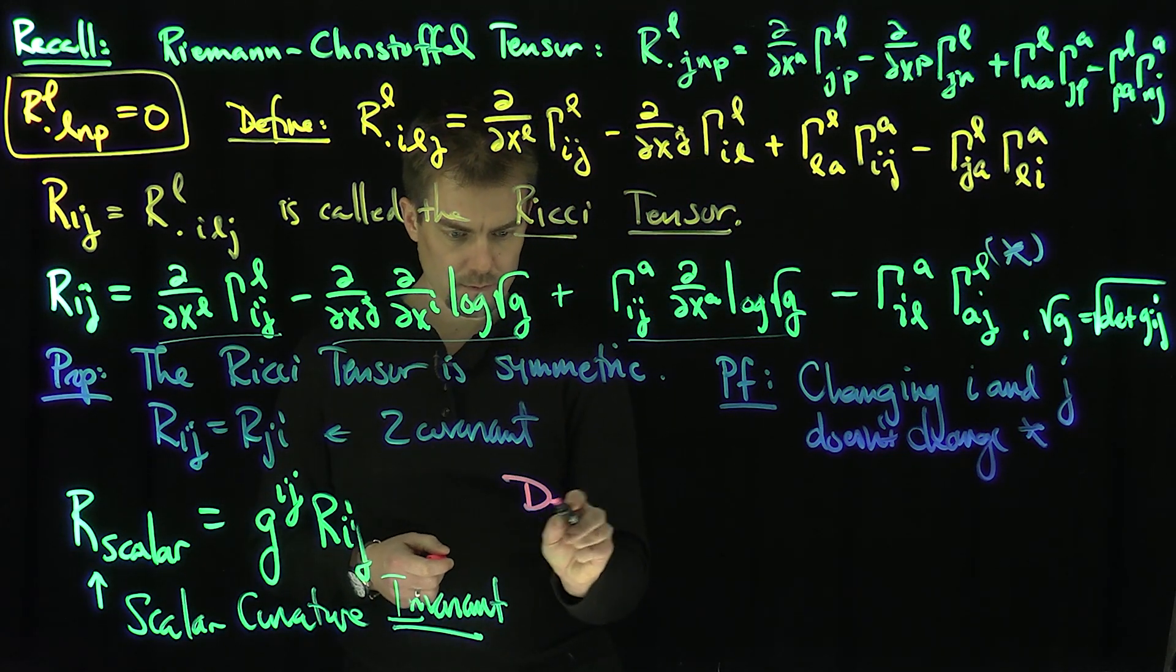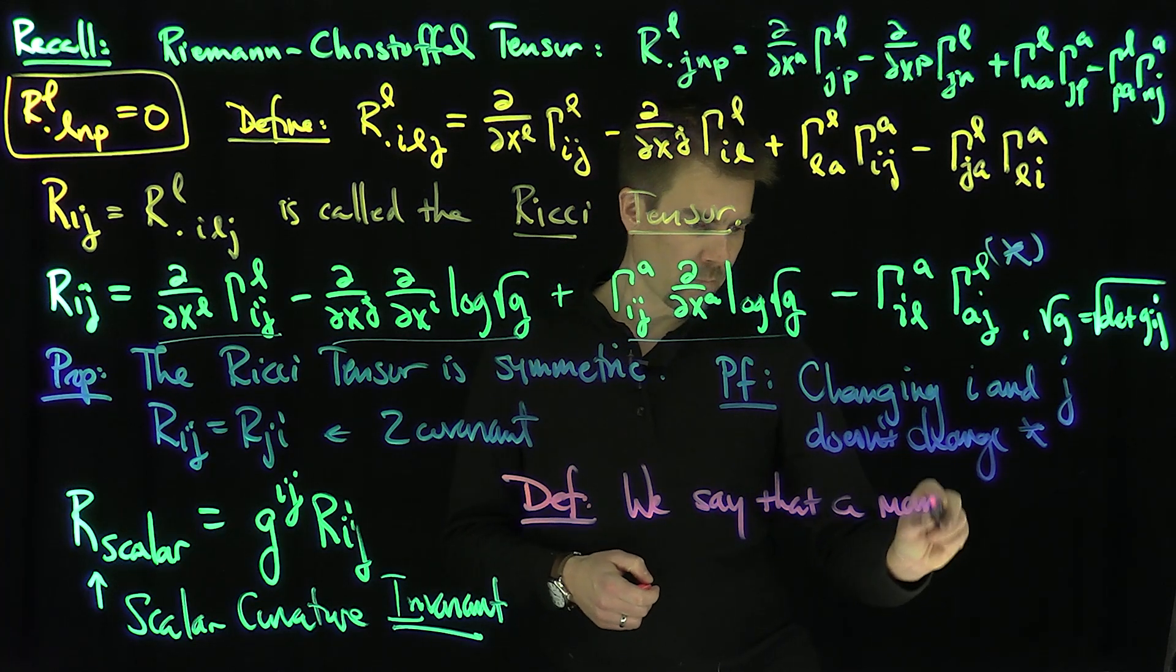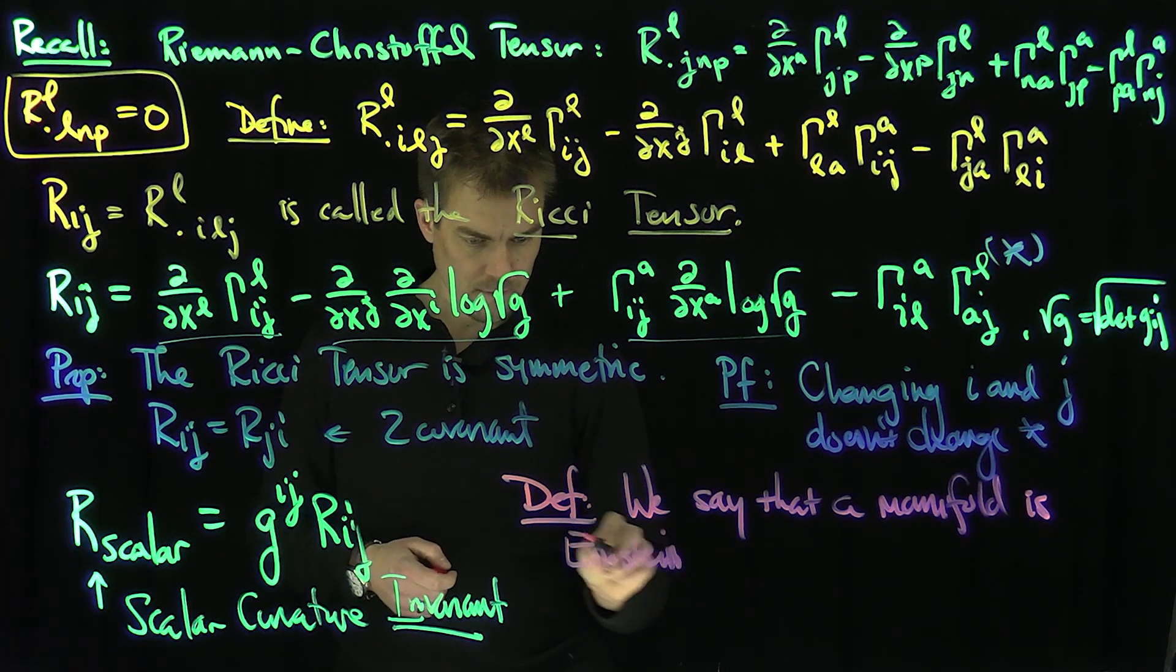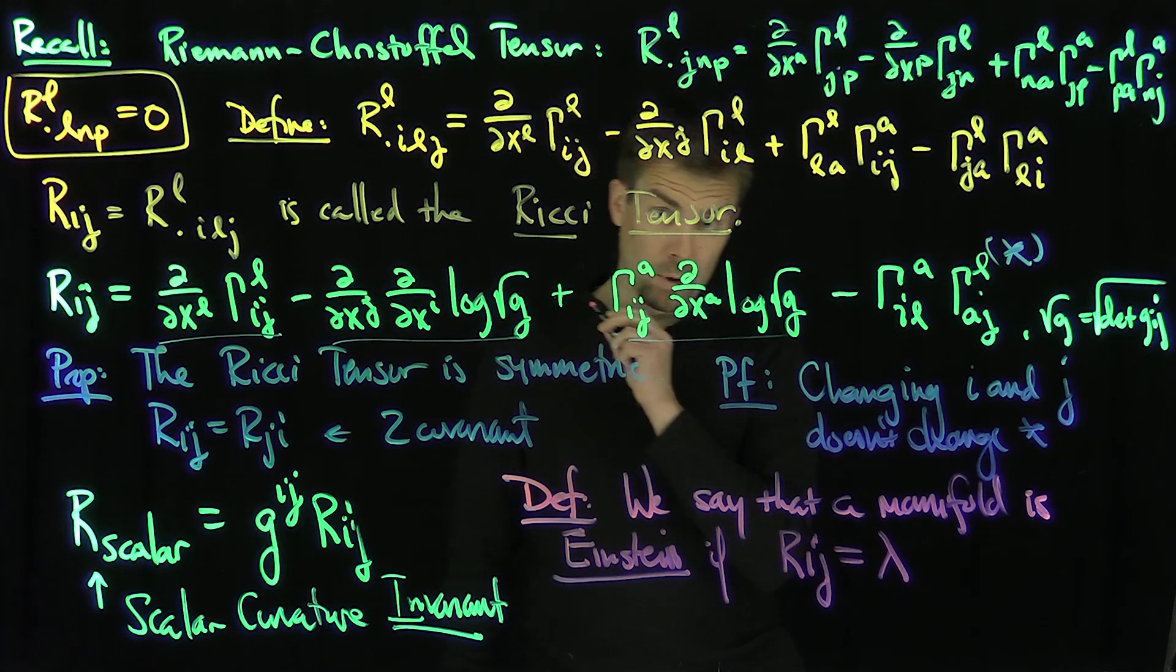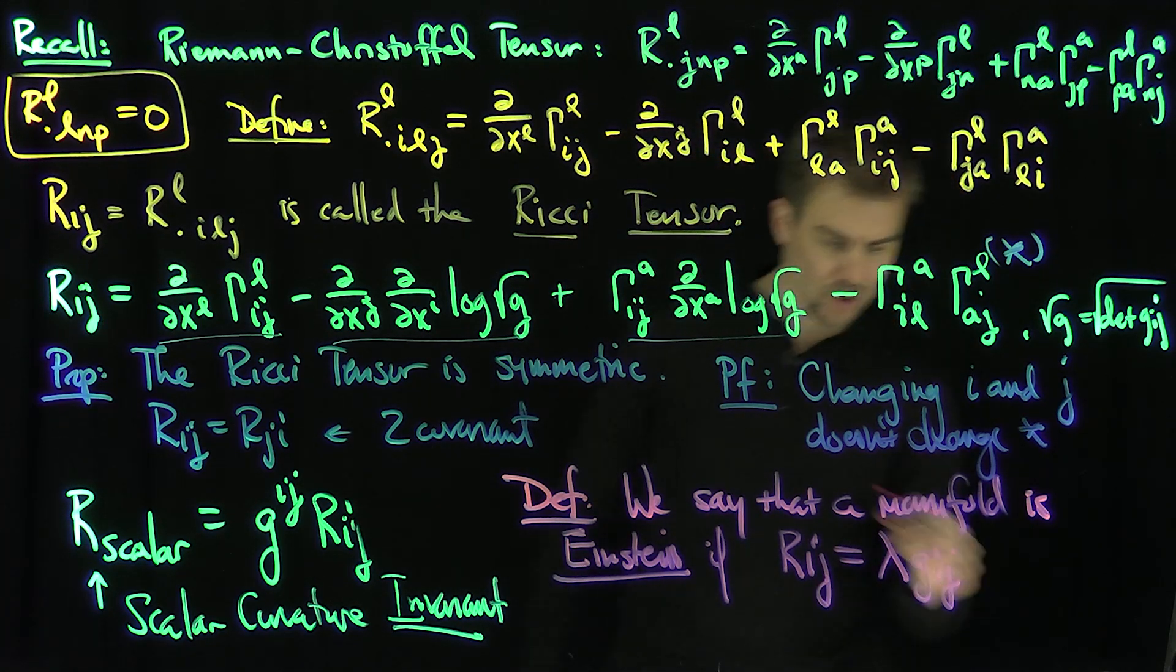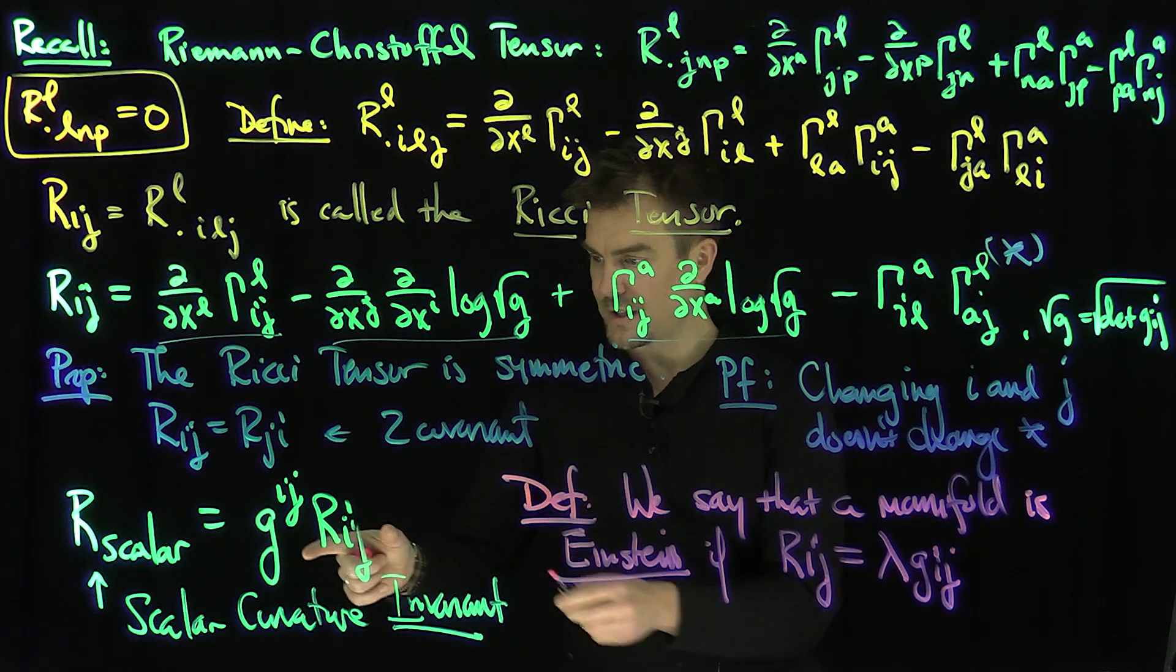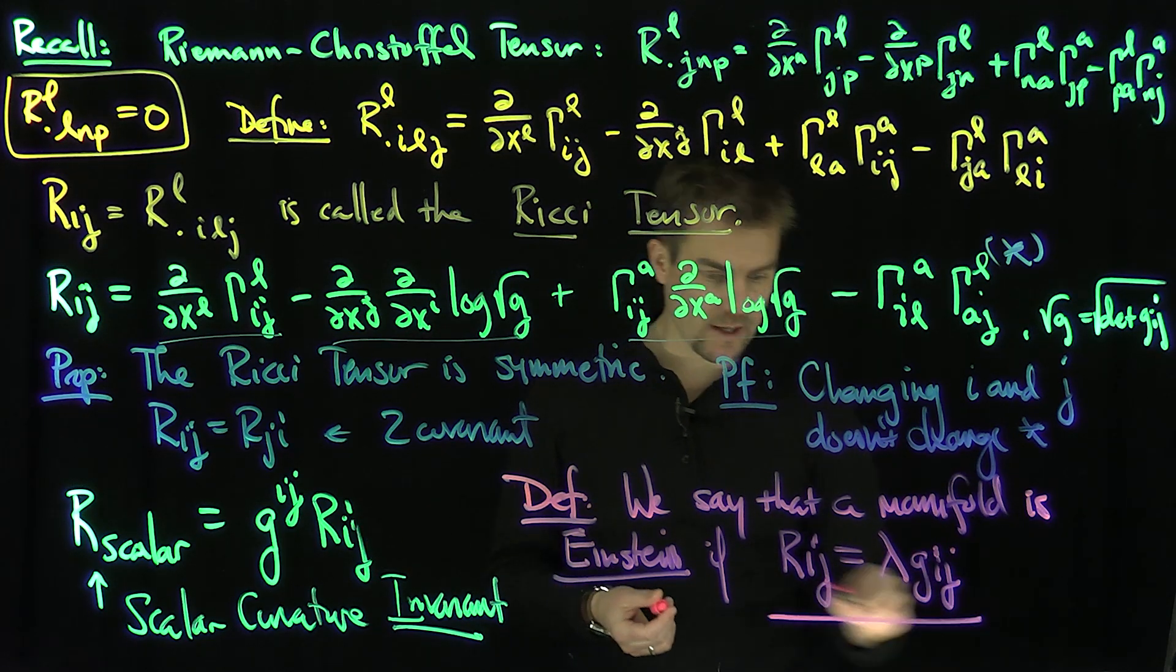And once we have the scalar curvature invariant, we can define what it means for a manifold to be Einstein. Definition: We say that a manifold is an Einstein manifold if R_IJ, the Ricci curvature, is a multiple lambda of the metric tensor G_IJ. And of course, if this is the case, we can use this curvature invariant. If I hit this with the inverse matrix G^IJ and trace, we see that this lambda is R_scalar over N, where N is the dimension of the space.